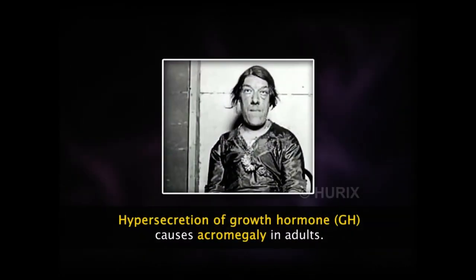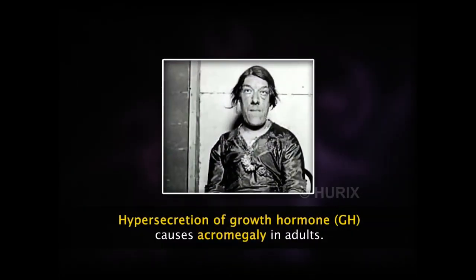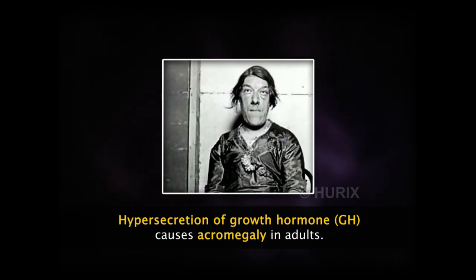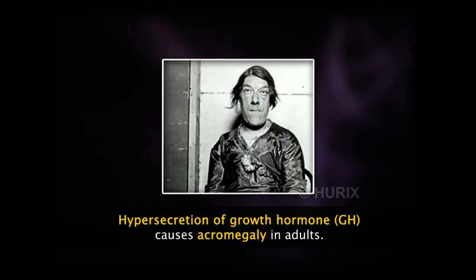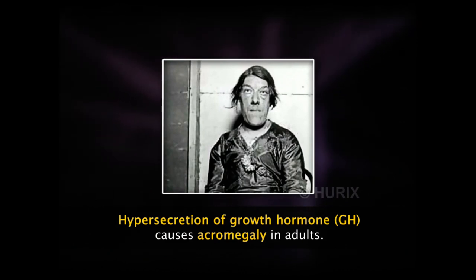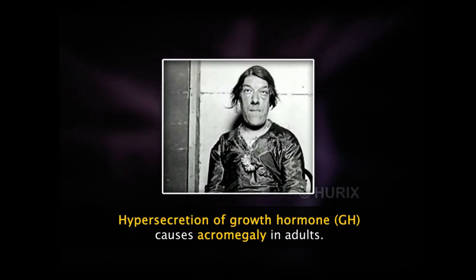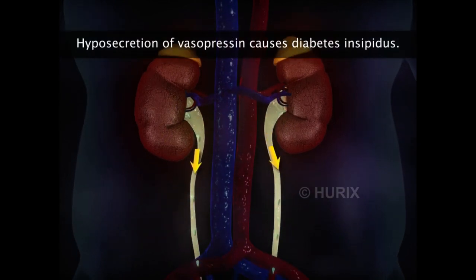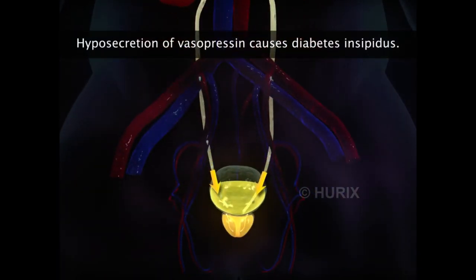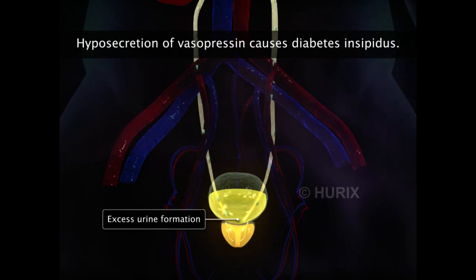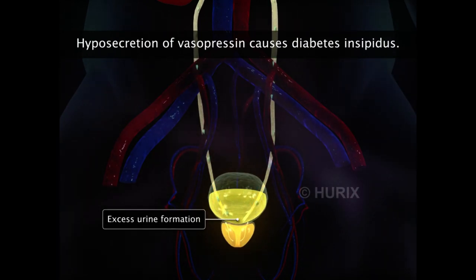When the growth hormone level increases in an adult, it leads to a condition called acromegaly. In acromegaly, there is disproportionate enlargement of the face, jaw, lips, and ears. Reduced secretion of antidiuretic hormone, ADH or vasopressin, causes a clinical condition called diabetes insipidus. In this disorder, a person may pass 15 to 20 liters of urine in a day.